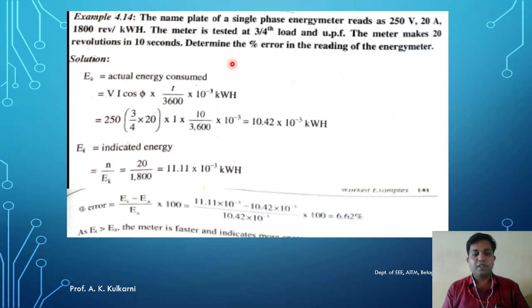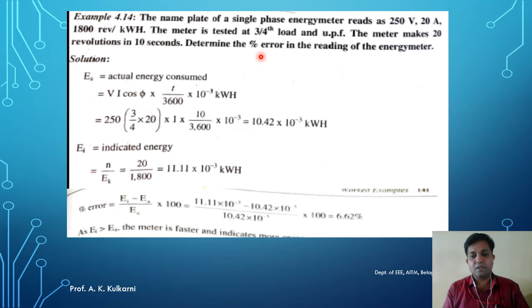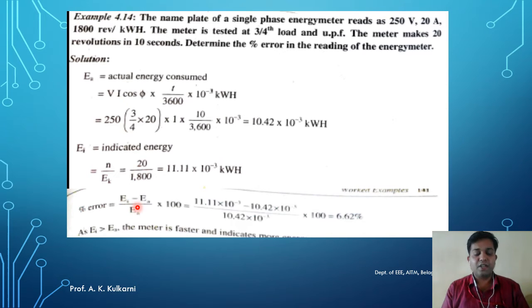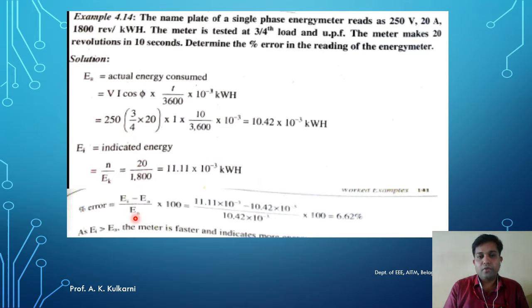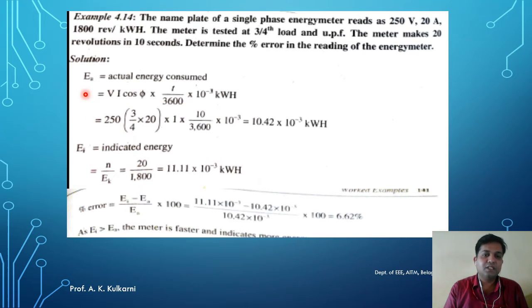Determine the percentage error in the reading of the energy meter. We need to find the percentage error, which is given by: percentage error = (energy indicated − actual energy) / actual energy × 100. For that, we need to find both the indicated energy and the actual energy.